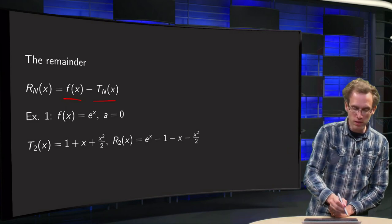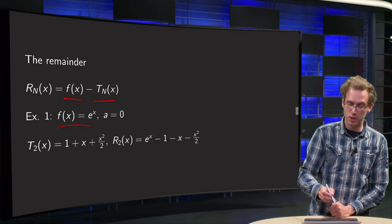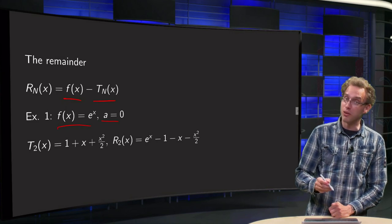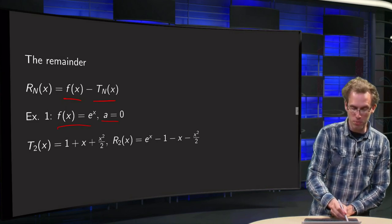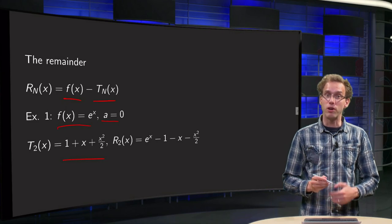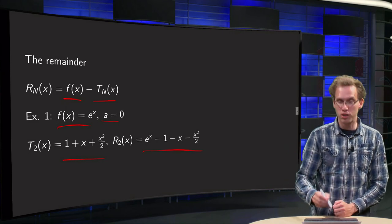For example, if your f(x) equals the exponential function, a equals 0, you know the second-order Taylor polynomial 1 plus x plus x squared over 2, so the remainder would be this ugly expression over here.